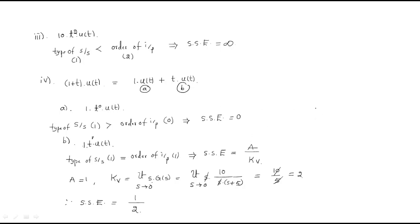Combining the errors: for part A the error is 0, and for part B the error is 1/2. So the total steady-state error is 0 + 1/2 = 1/2. When combination inputs are given, divide them individually, find the steady-state error for each, then sum them.